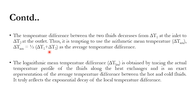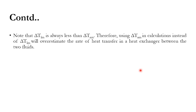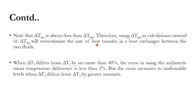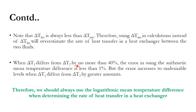The arithmetic mean temperature difference only takes into account ΔT1 at one end and ΔT2 at the other end, whereas LMTD provides point-to-point information. Due to the exponential decay of the local temperature difference, ΔTlm will always be less than ΔTam. This means that using ΔTam overestimates the rate of heat transfer. When ΔT1 and ΔT2 differ by no more than 40%, the error is about 1%, but as their difference increases, the percentage error increases — so it is better to use LMTD in calculations.